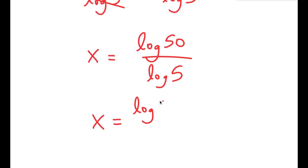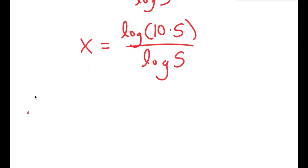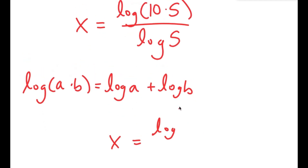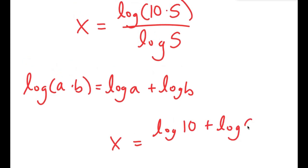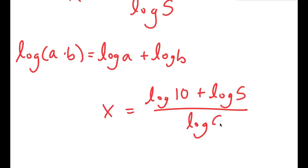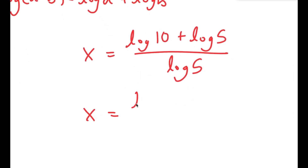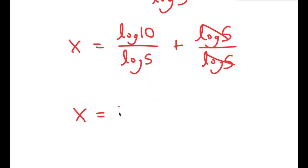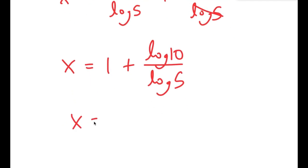I'm going to rewrite this as log of 10 times 5, over log of 5. If I have something in the form log of a times b, this is equal to log a plus log b. So this turns into x is equal to log of 10 plus log of 5, all over log of 5. This is equal to log 10 over log 5, plus log 5 over log 5, which turns into 1 plus log 10 over log 5. Since log 10 is equal to 1, I get x equals 1 plus 1 over log 5.